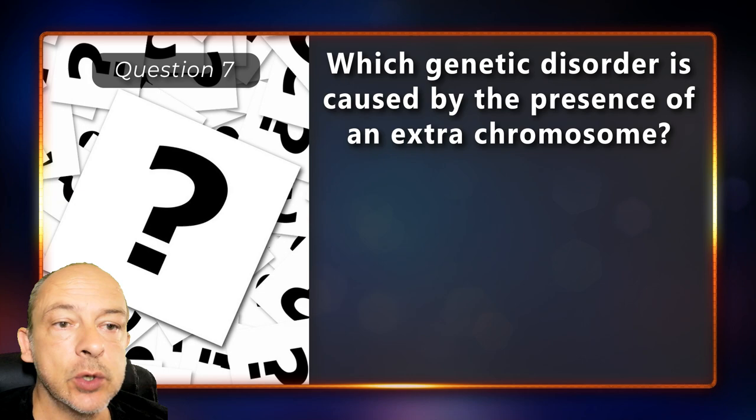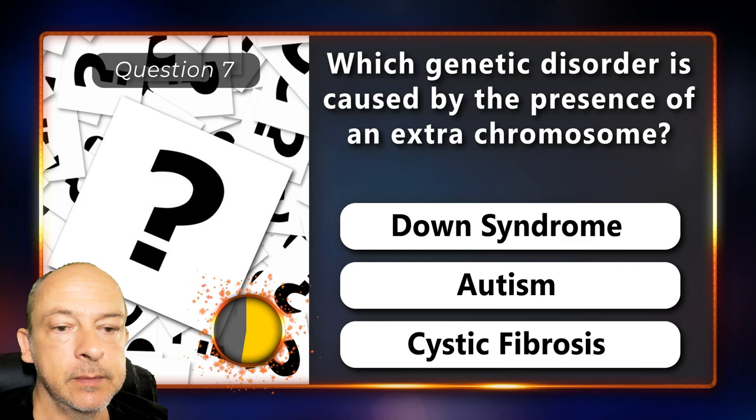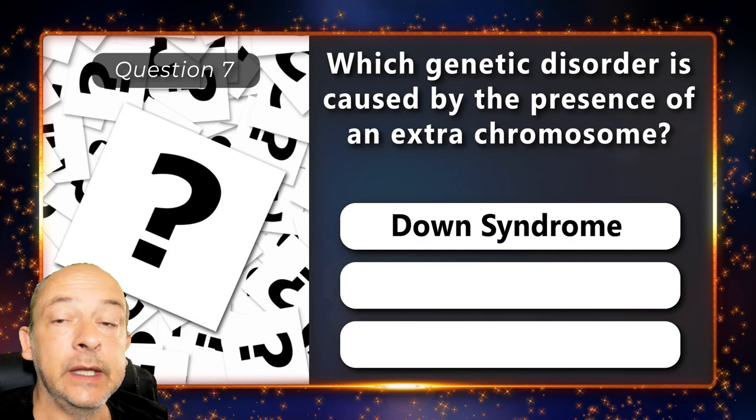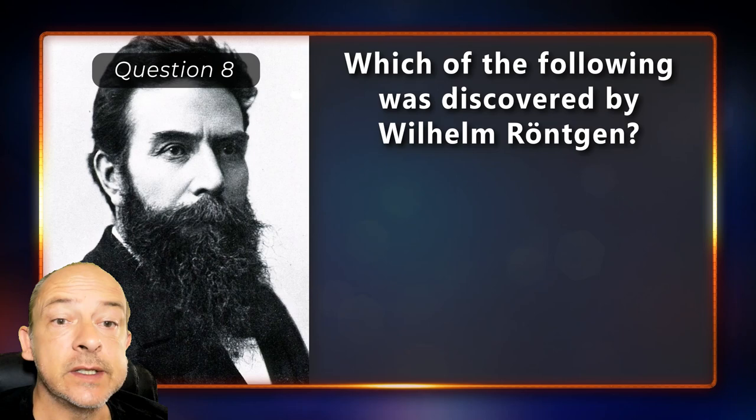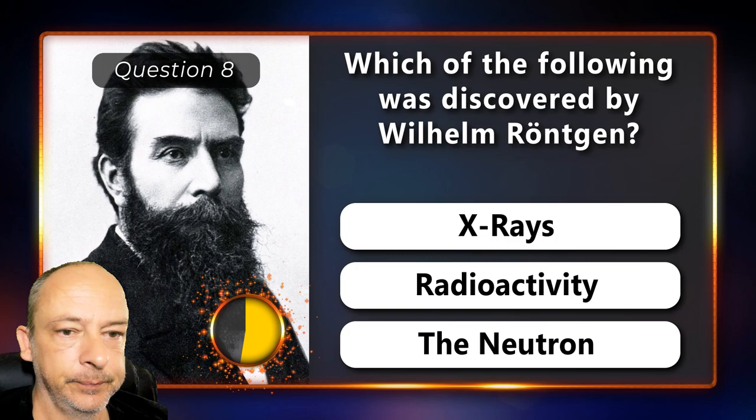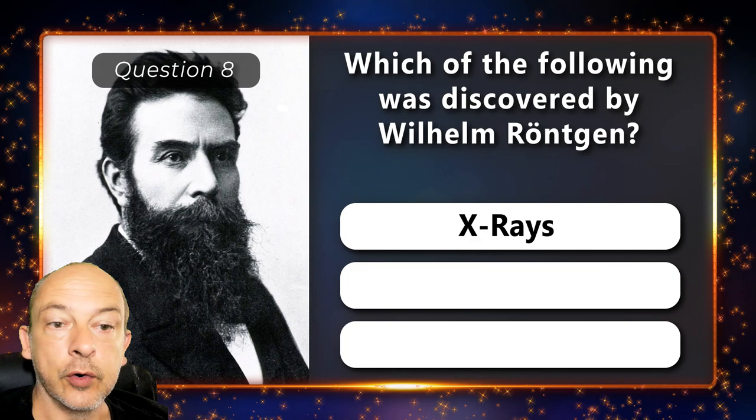Which genetic disorder is caused by the presence of an extra chromosome — is it Down syndrome, autism or cystic fibrosis? Down syndrome. Which of the following was discovered by Wilhelm Röntgen — X-rays, radioactivity or the neutron? The correct answer is X-rays.